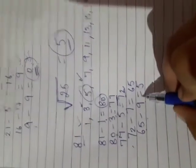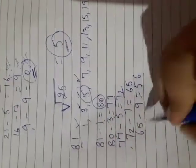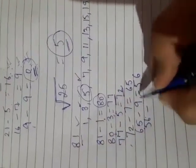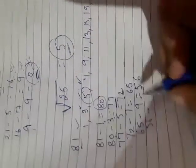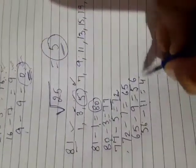65 minus 9. 65 minus 9 is 56. Now 56 minus next odd number is 11, subtract 11. 56 minus 11 is 45.